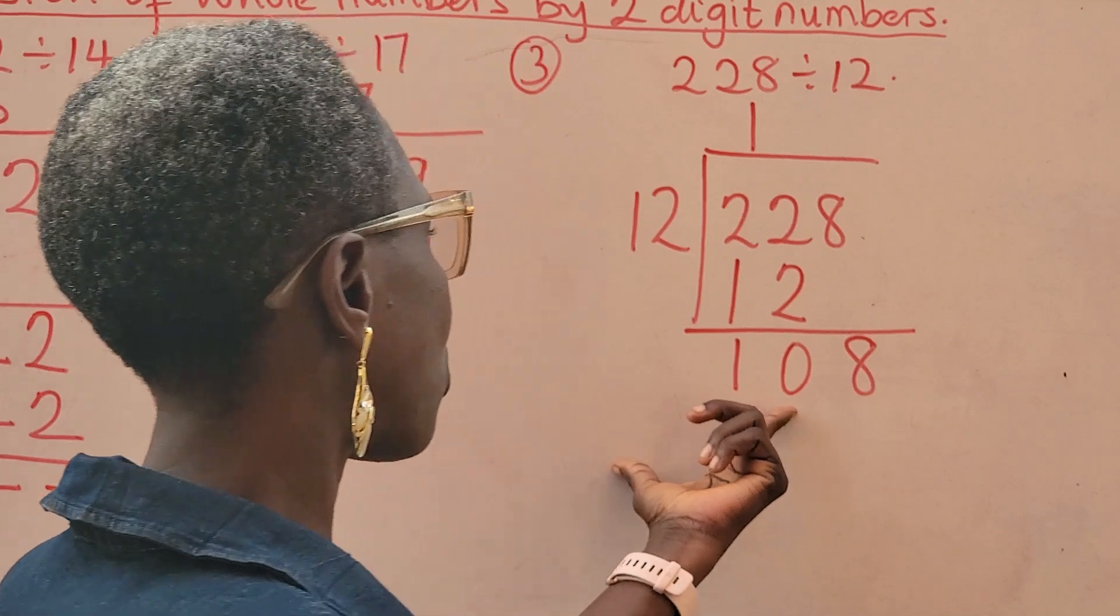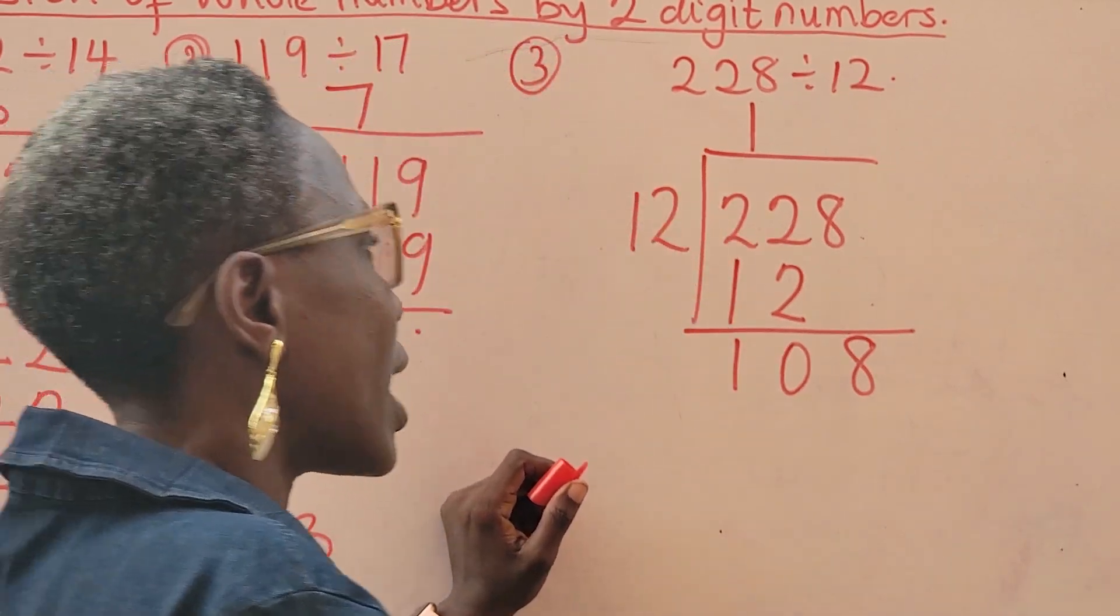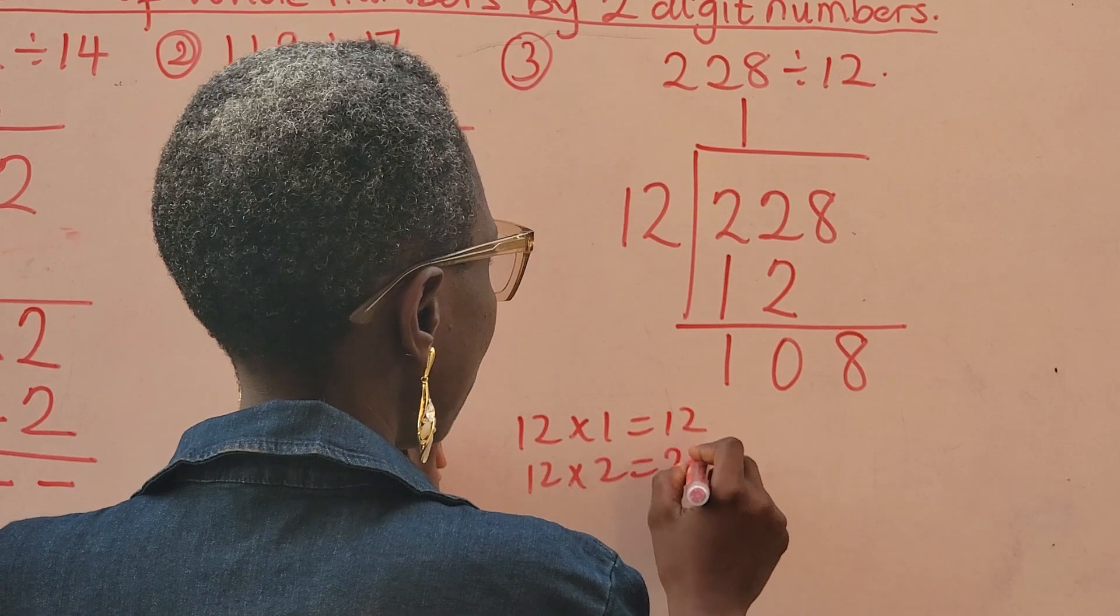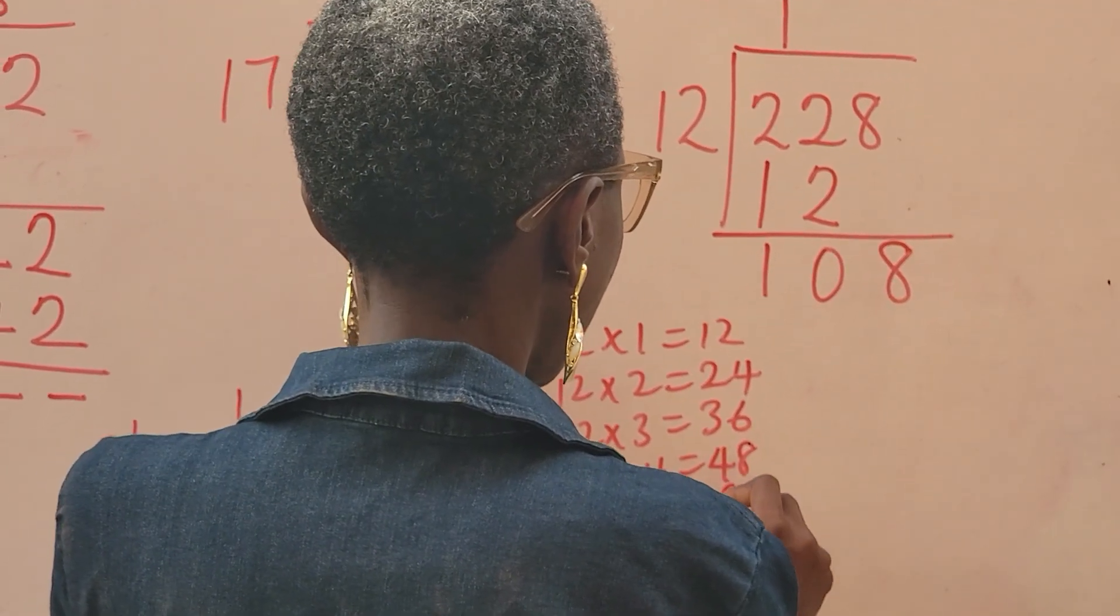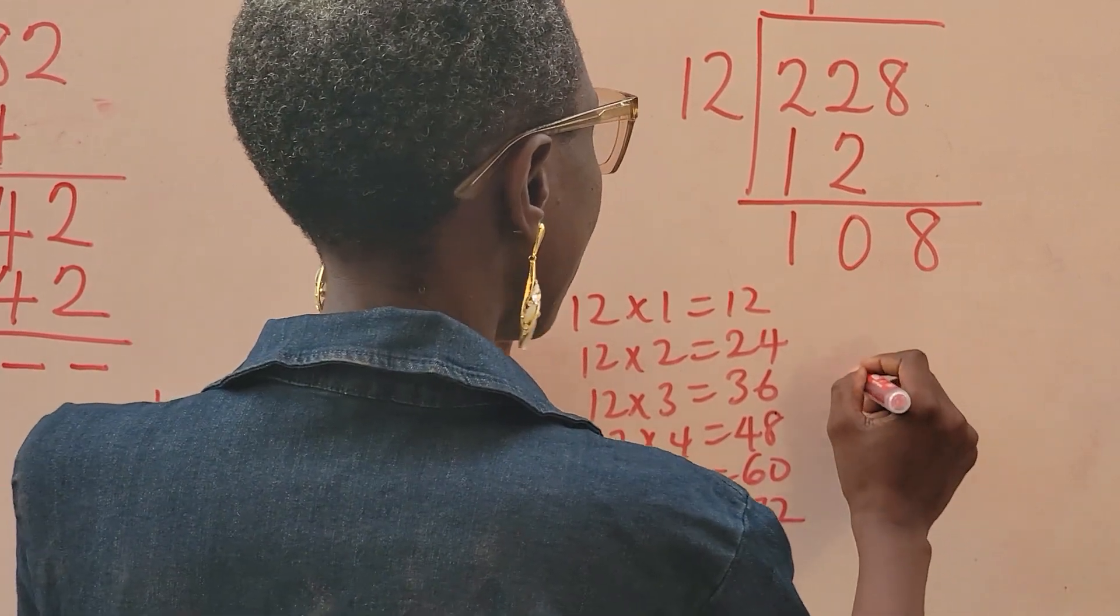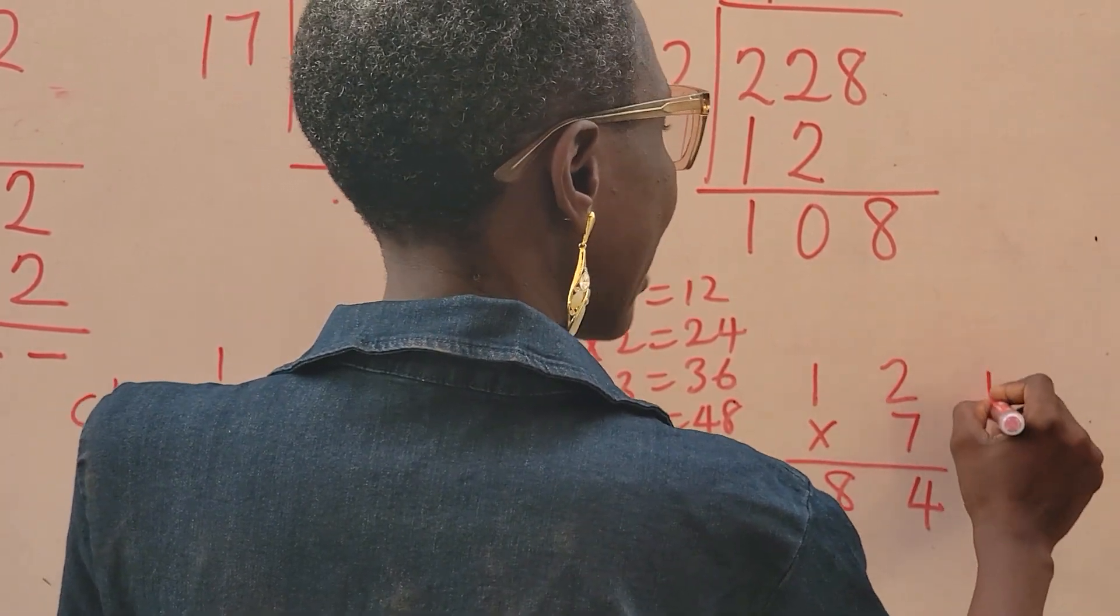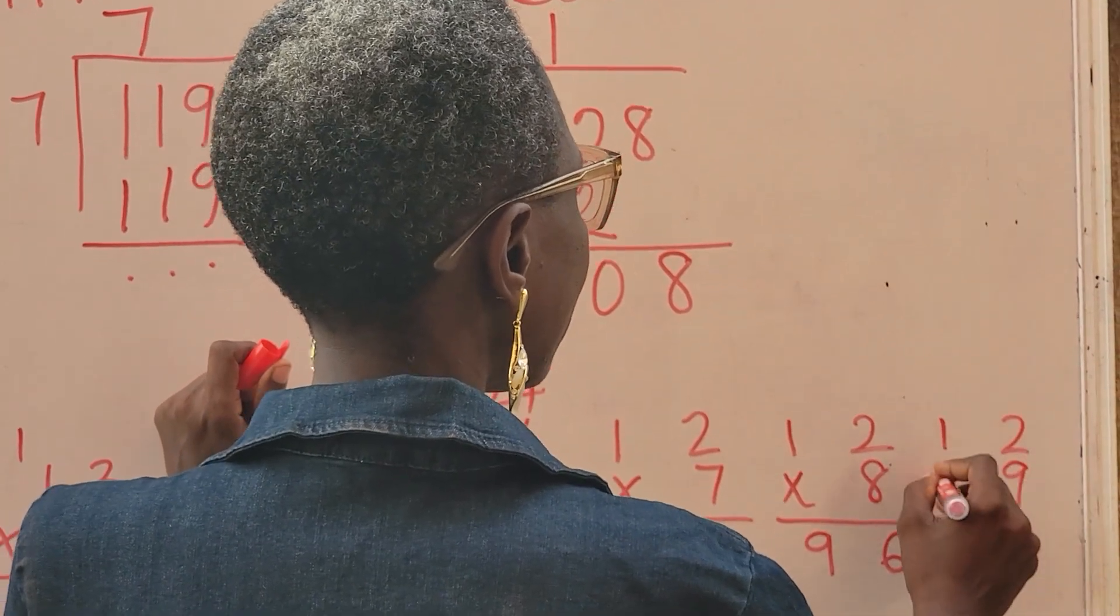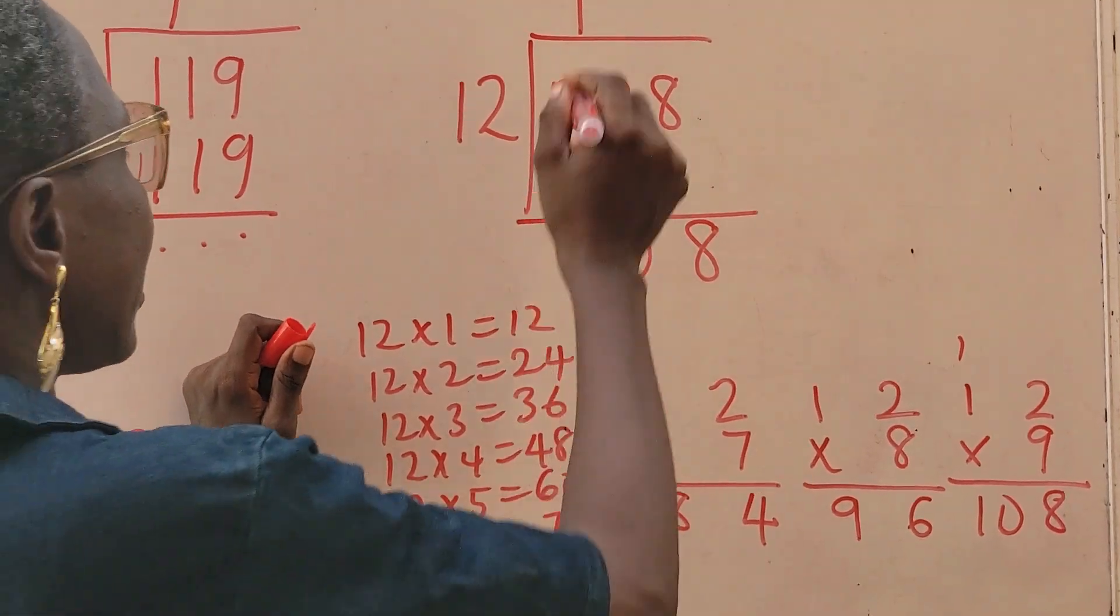See, 108. Now, we cannot use 10. So we have to have our table 12. Now, if you are familiar with your table 12, you will already know your answer. But if you are not, you can just go ahead and do your table 12. 12 times 1 is 12. 12 times 2 is 24. 12 times 3 is 36. 12 times 4 is 48. 12 times 5 is 60. 12 times 6 is 72. 12 times 7, that's 84. 12 times 8. This is 16. And this is 96. 12 times 9. 2 times 9 is 18. 9 times 1 is 9 plus this 10. So 12 times 9 is 108.